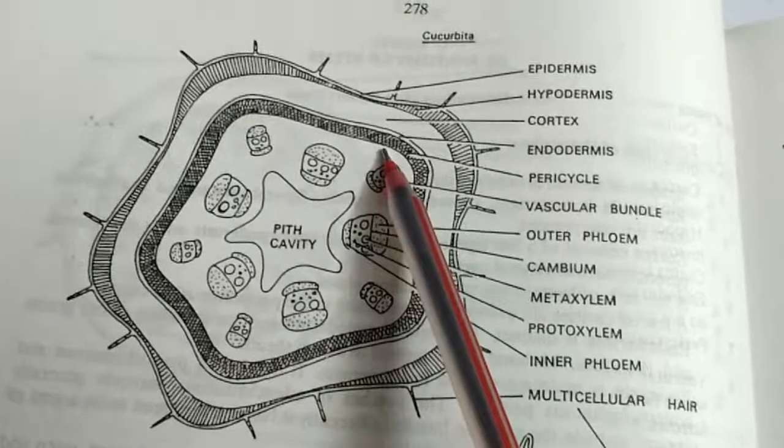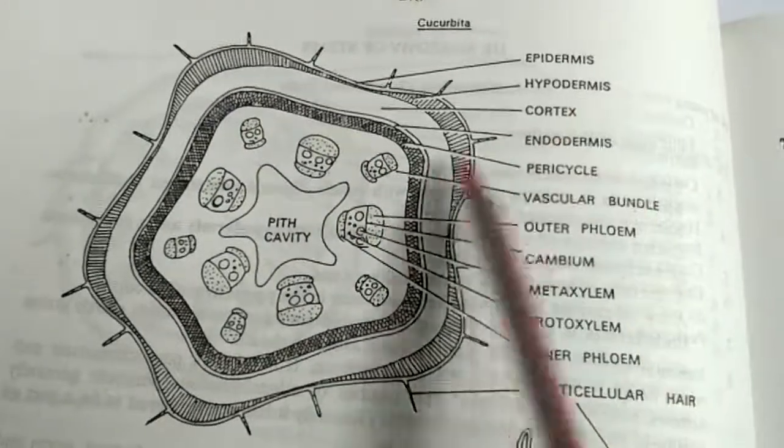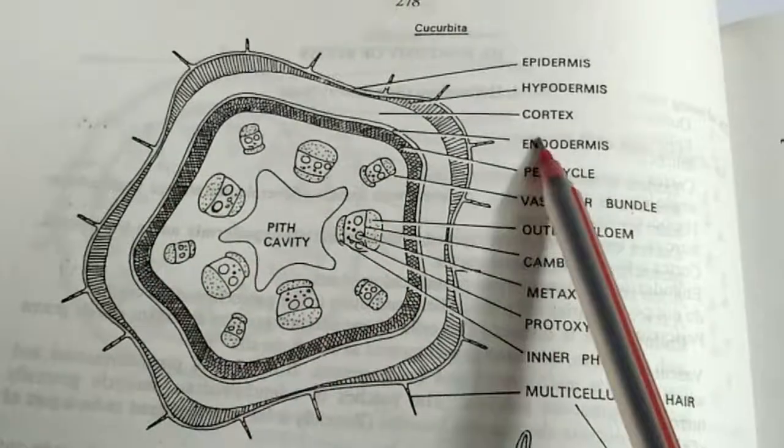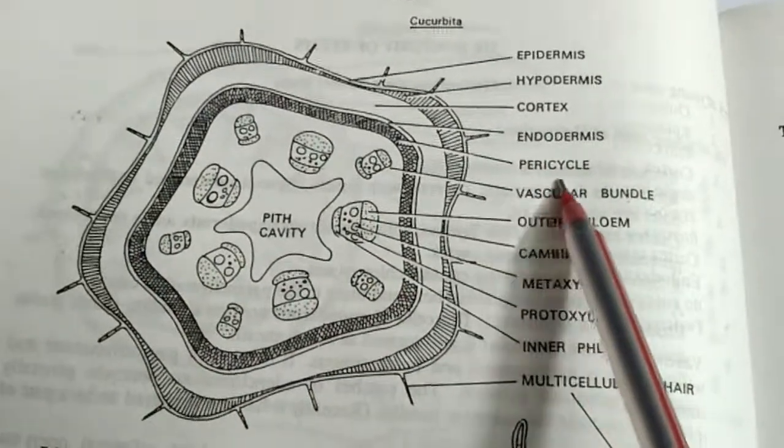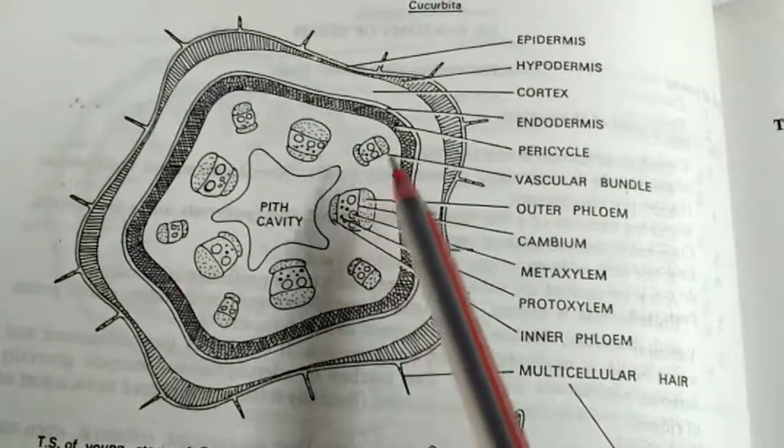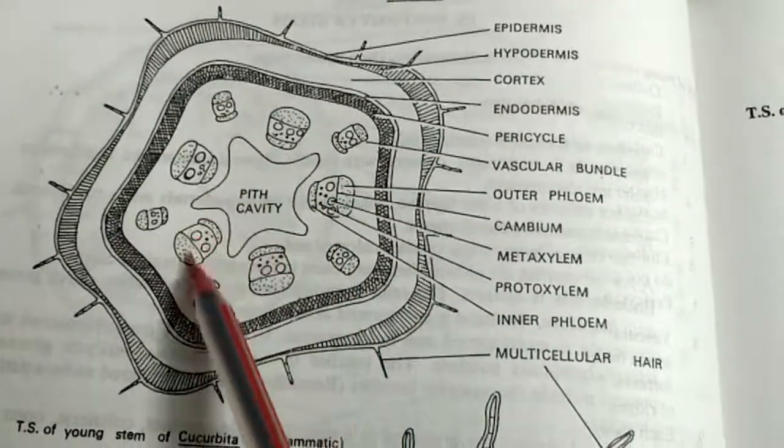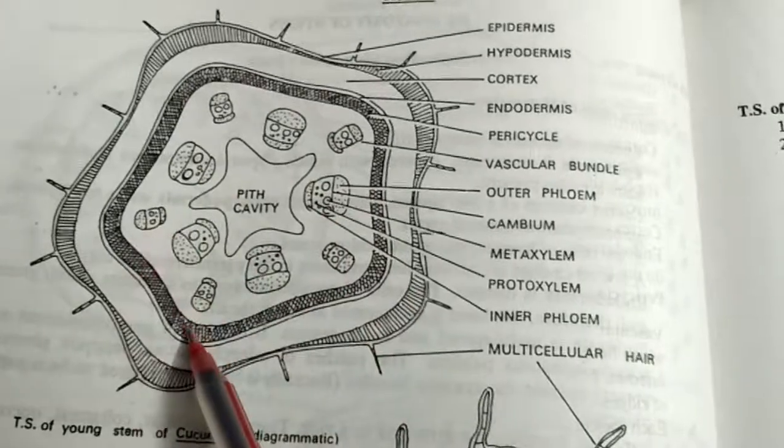Then pericycle, which is very dark because it has sclerenchymatous cells which are thick, dead cells. Vascular bundles arranged in a ring form.